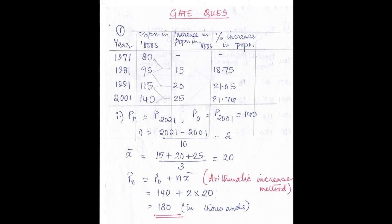The third column is completed. Now make a fourth column for percentage increase in population. The first row is blank. The percentage increase is calculated as: (increase / base value) × 100. So: 15/80 × 100, then 20/95 × 100, then 25/115 × 100. The fourth column is also completed.